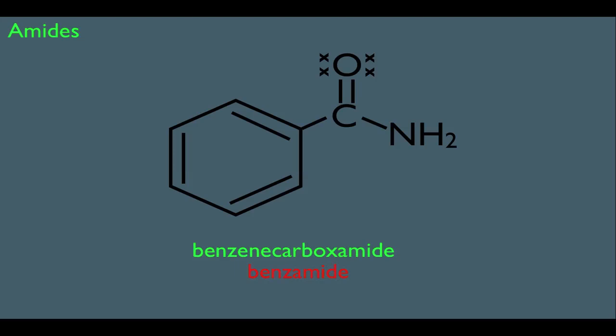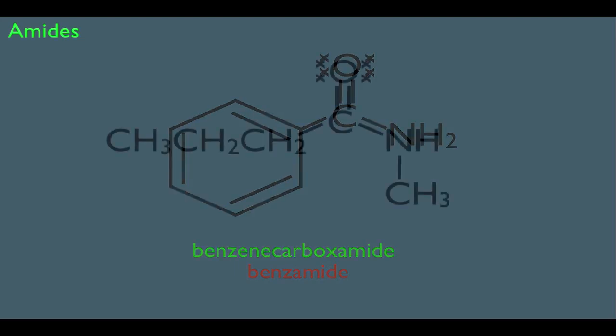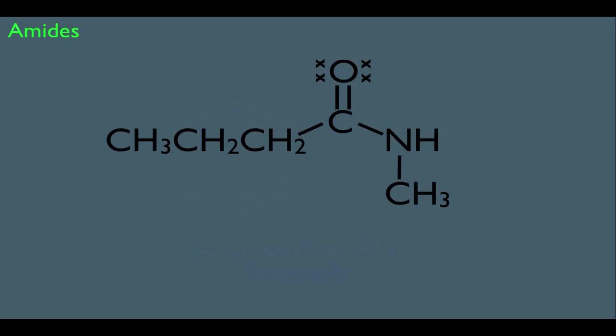Now, let's look at an example where the hydrogens on the nitrogen are actually replaced by some kind of alkyl group. So notice we have a methyl directly connected to that nitrogen. What we do is start with the carbonyl side. What we have is a 4-carbon chain here. That means the parent name would be butanamide.